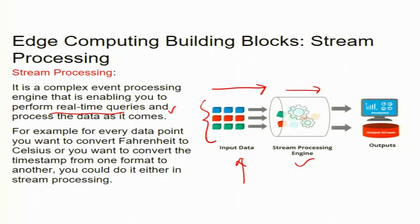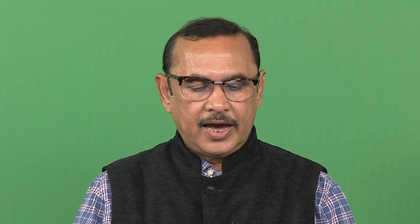The edge computing building block also includes Function as a Service (FaaS), which is responsible for running lightweight compute. If you want to do more sophisticated processing, you could move that to Function as a Service. For example, if you have business intelligence to apply while data is being received, Function as a Service can be applied as the business intelligence — and this is also possible at the edge, unlike what was only carried out by the highly centralized cloud in a client-server architecture model.